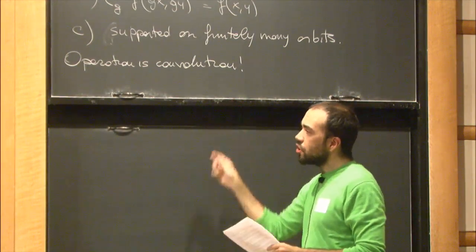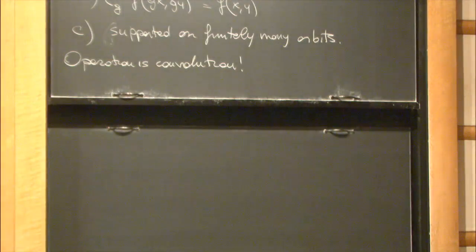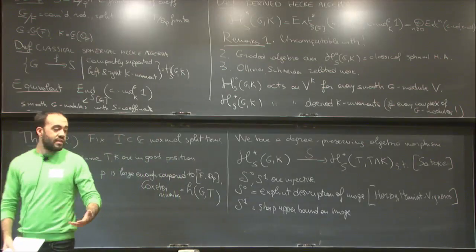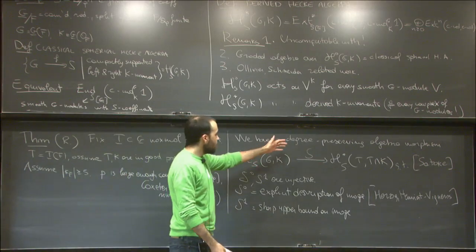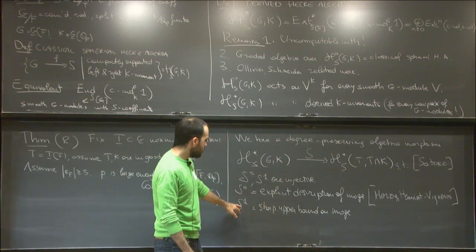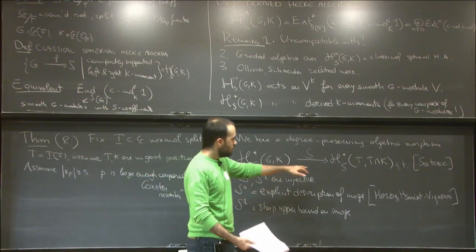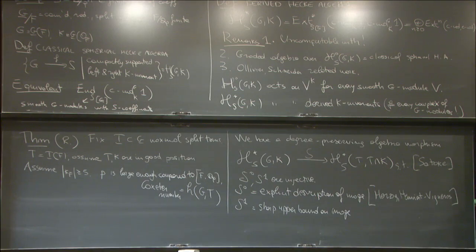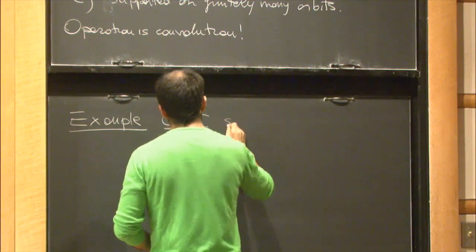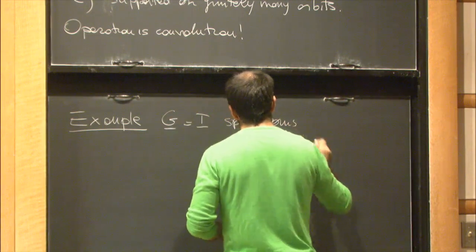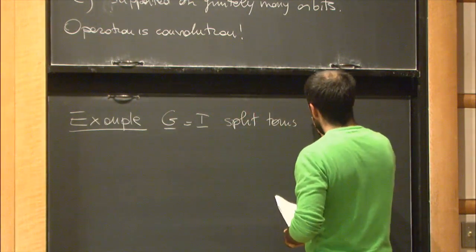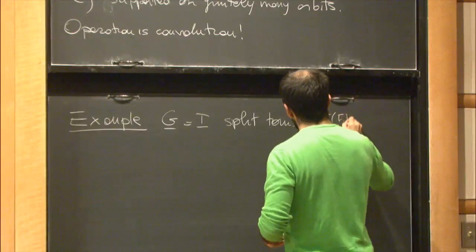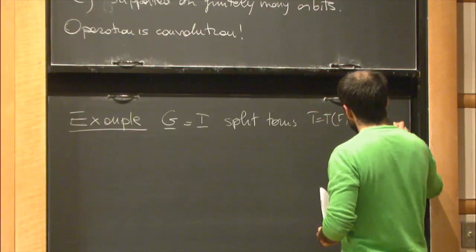Now that we have this better description, what we really want to do is understand the derived algebra of the torus. Recall the theorem was telling me that to understand degree one Hecke operators, it's enough, more or less, to understand H₁ of the torus. So let me write this down as an example. In my example, G equals T is a split torus. So T = T(F), and K is just the points over the ring of integers.